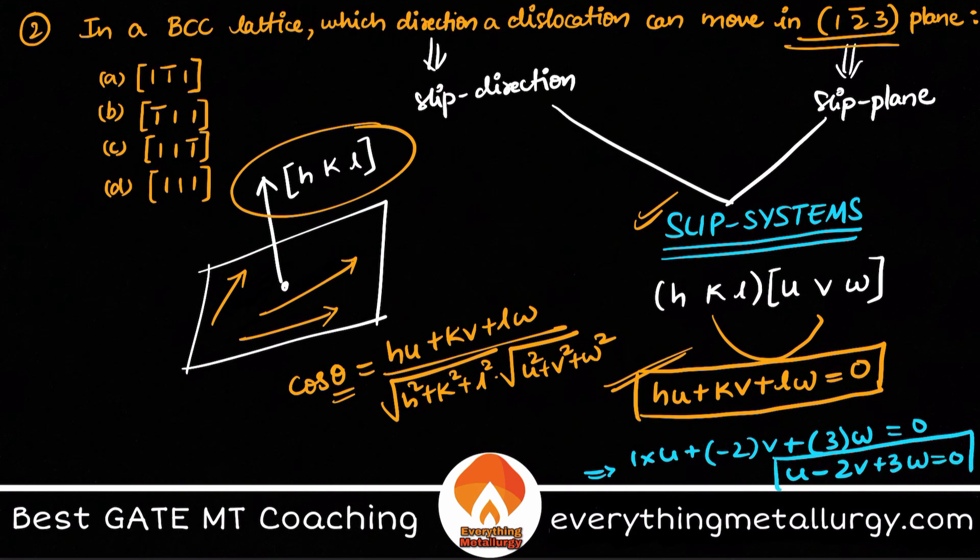That's all. So now if you just carefully put in the options, what do you get? B is an option where 1̄ is minus 1, minus 2 into 1, plus 3 equal to zero, right? This is the option you have. So B is the option: [1̄ 1 1]. So again, this is a very basic question but yet many people confuse, so that is why I thought to put it over here.